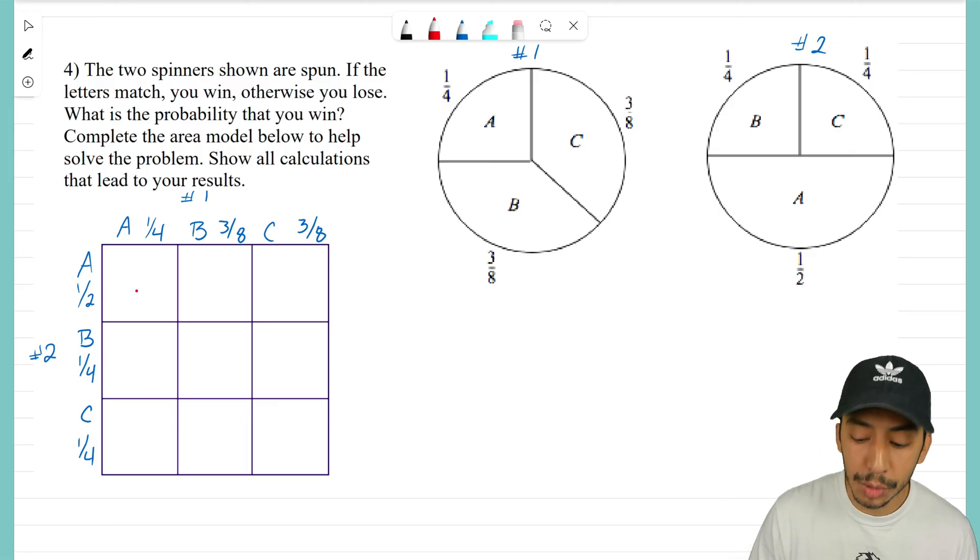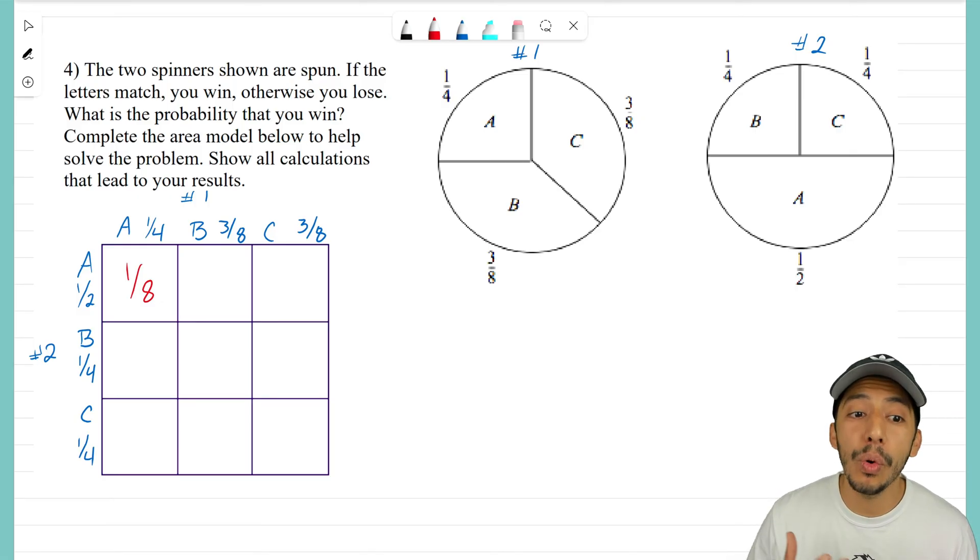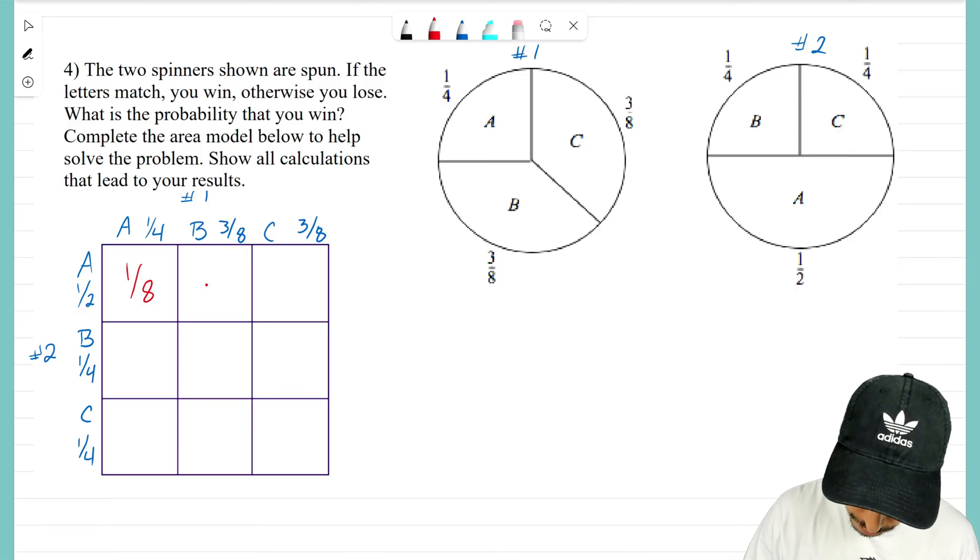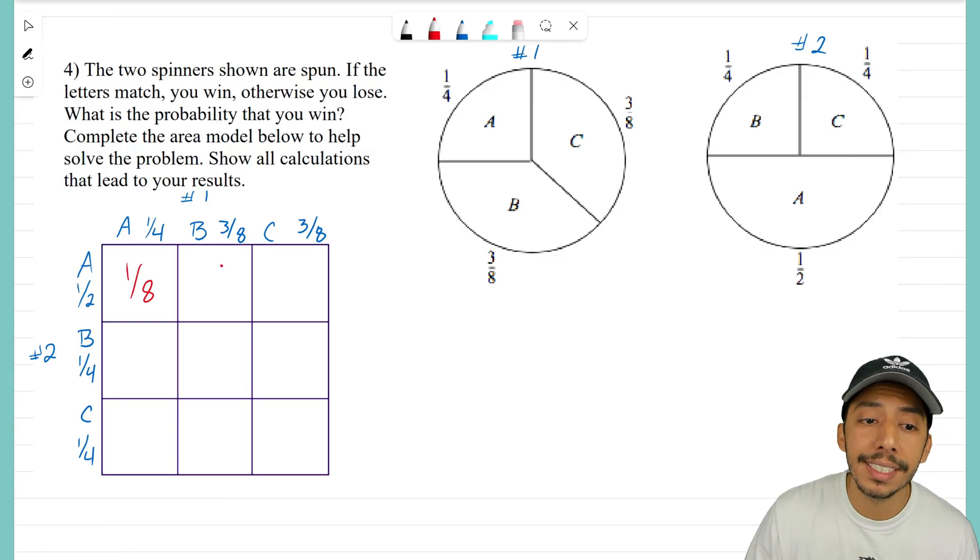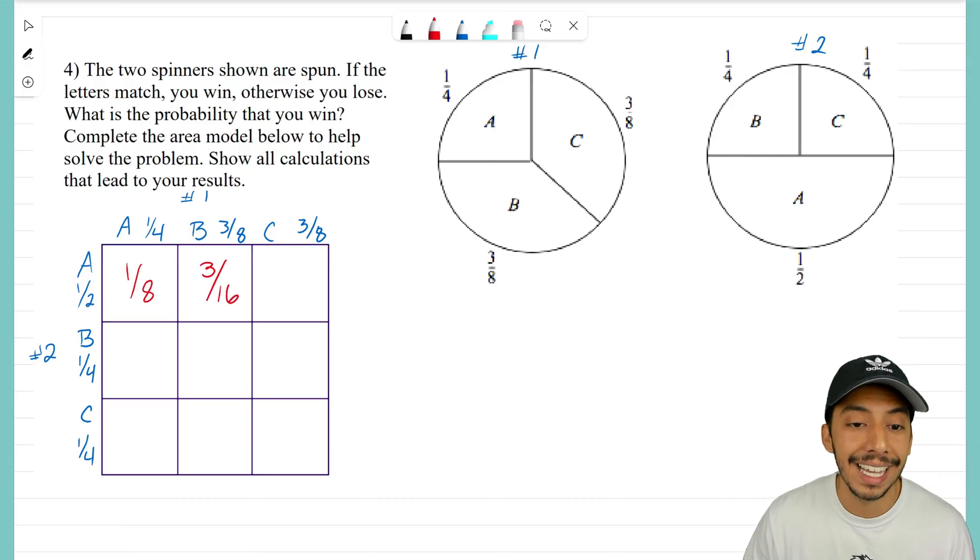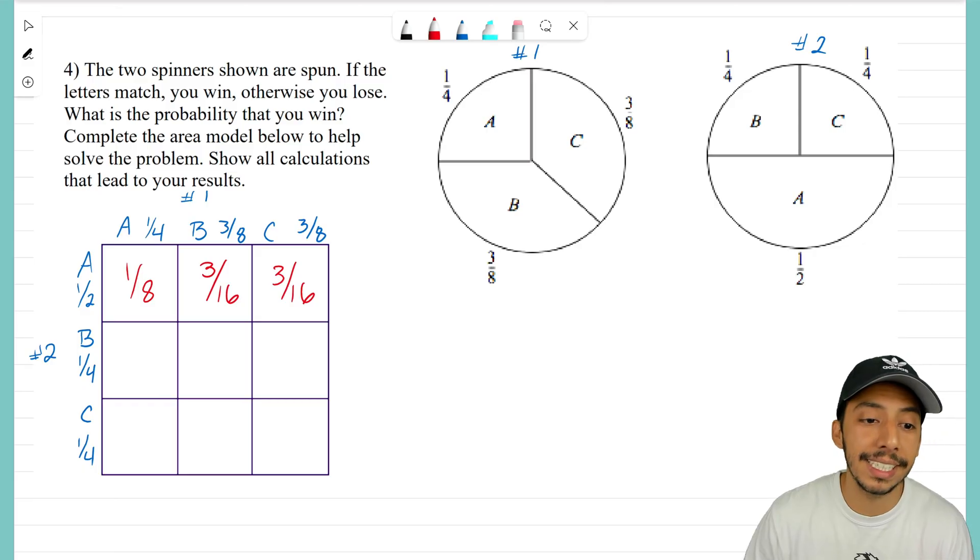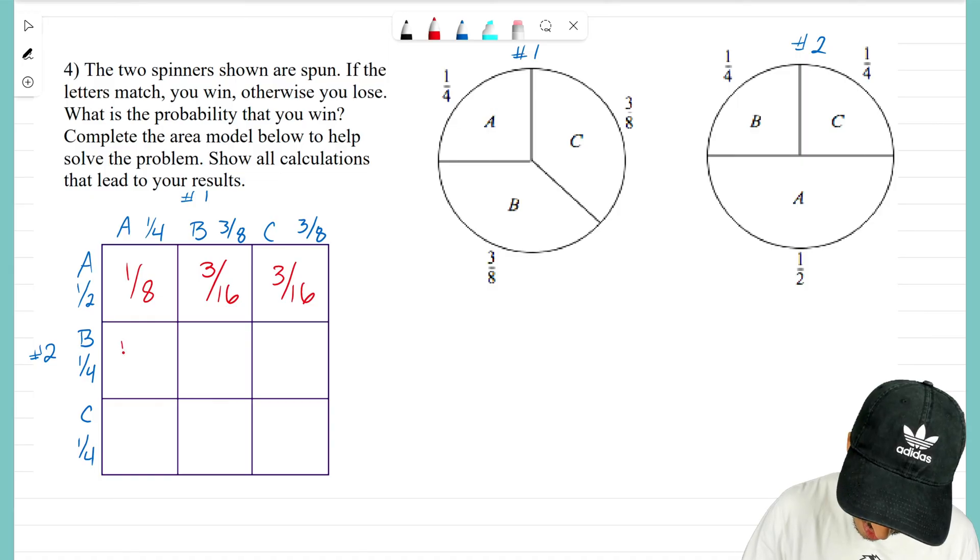And over here I think it's the same deal—three-eighths times one-half, so we're going to get three over sixteen. Let's keep working through this. All right, one-fourth times one-fourth, that gives me one over sixteen. Three-eighths times one-fourth is going to give me three over thirty-two.